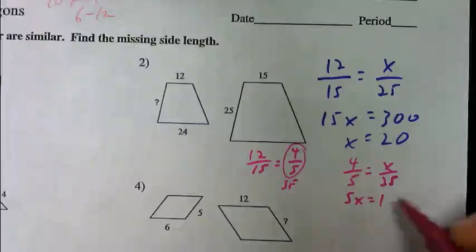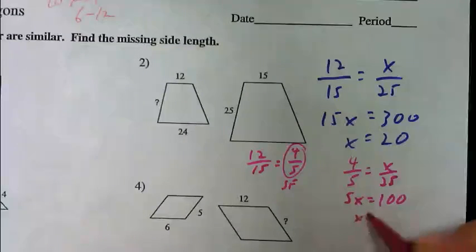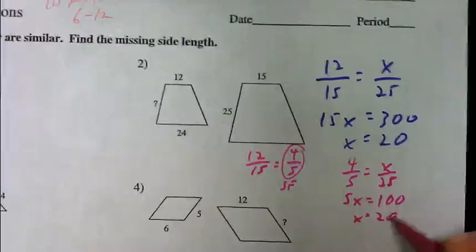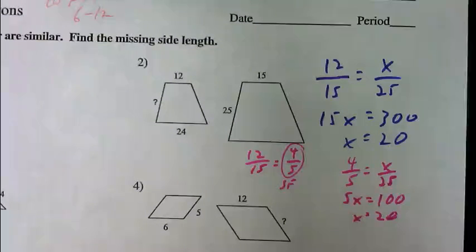Cross multiply and solve. So again, that's one way you can keep the numbers a little bit smaller. We could stick with the method that we had just done. Or you could do it this way. They both work.